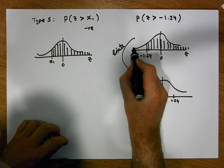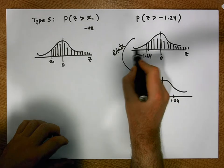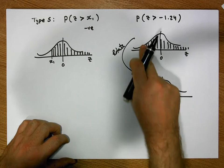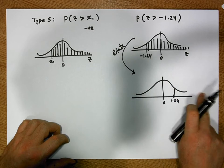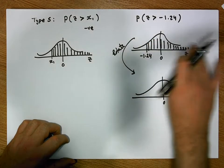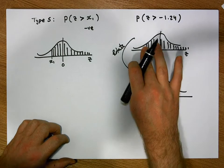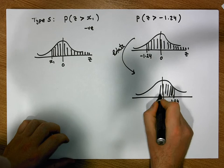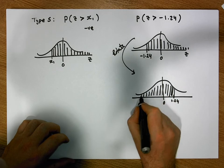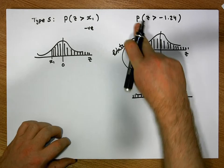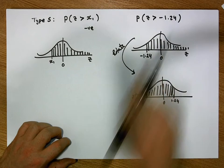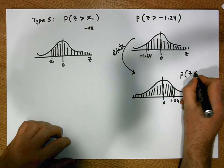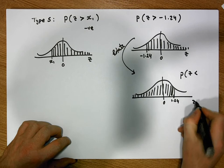We can see what has happened to the area in the tail: the area in the tail on the left becomes the area in the tail on the right-hand side. The tail area is not shaded, so it won't be shaded here either. What is shaded is the other part of the area under the curve, which does not include the area in the tail. So we've transformed our probability with respect to a negative value into the probability of observing a z-score that is less than 1.24.